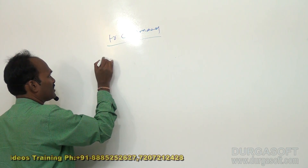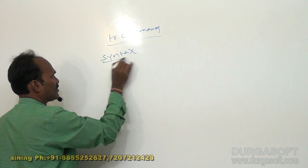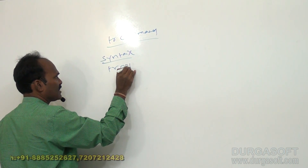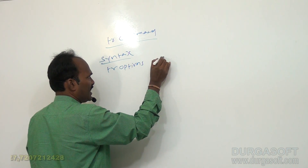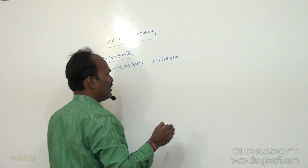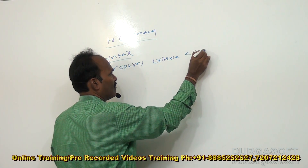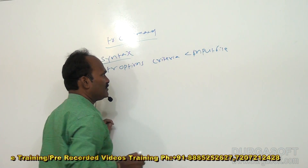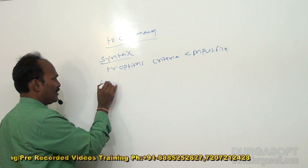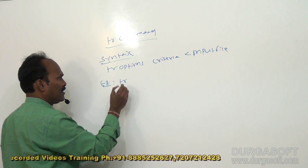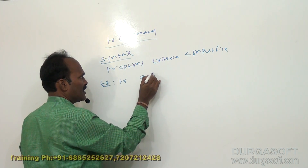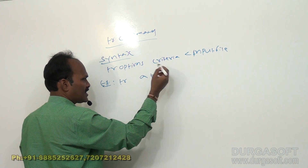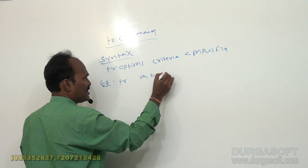The general syntax of the tr command is: tr [options] [criteria/replacement string] < [input file name]. For example, using no options, if the criteria is 'a' and the replacement is 'b', this is the replacement criteria — the translated string — and next you specify the input file.